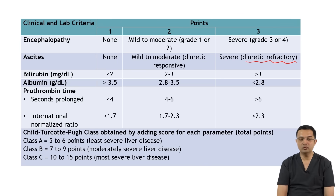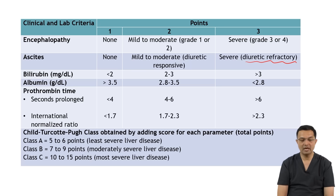For bilirubin: less than 2 mg/dL, score 1; bilirubin 2 to 3 mg/dL, the points given is 2; and bilirubin more than 3 mg/dL, the point given is 3.